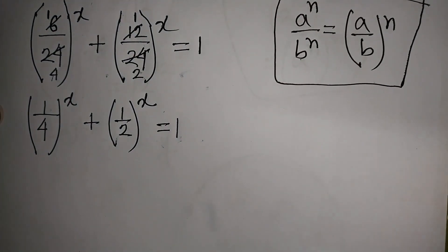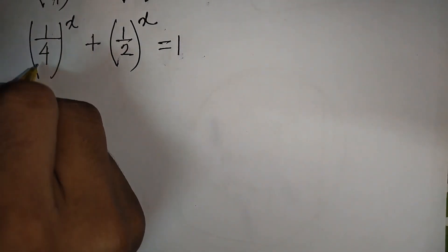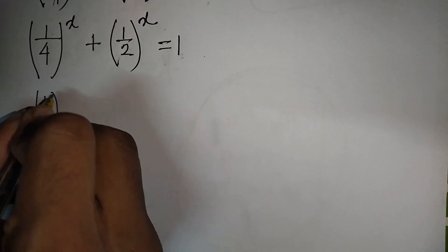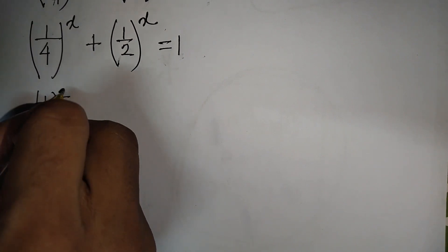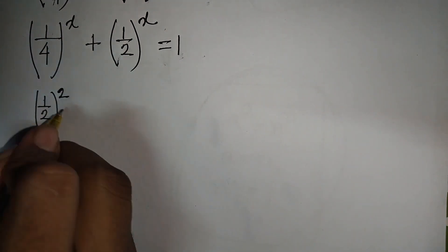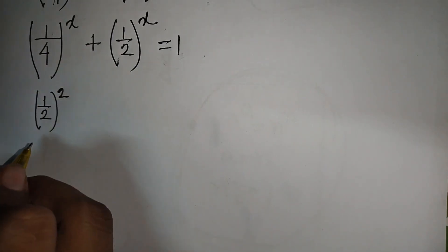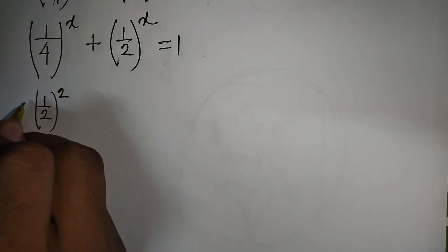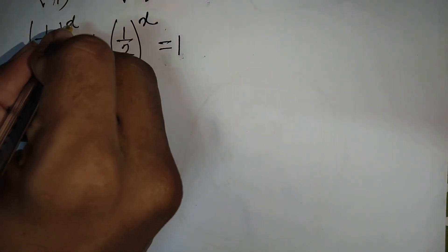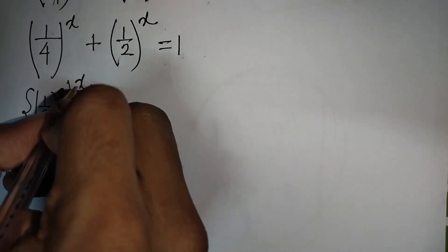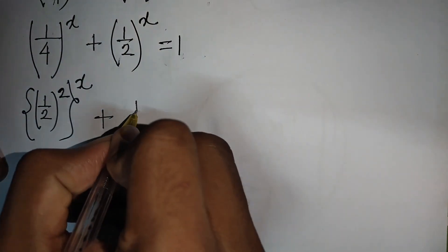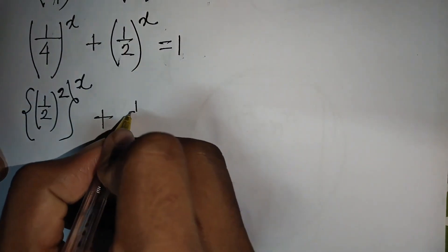Now 1/4 can be written as (1/2)^2, since (1/2)^2 = 1/4. So the first bracket (1/4)^x can be written as ((1/2)^2)^x.